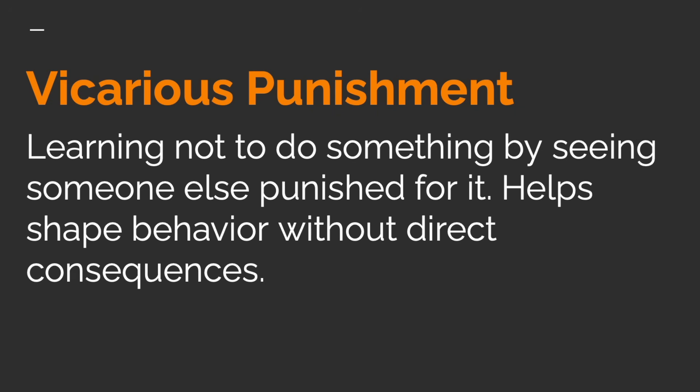On the other hand, vicarious punishment is learning not to do something by seeing someone else punished for it. This helps shape behavior without direct consequences.